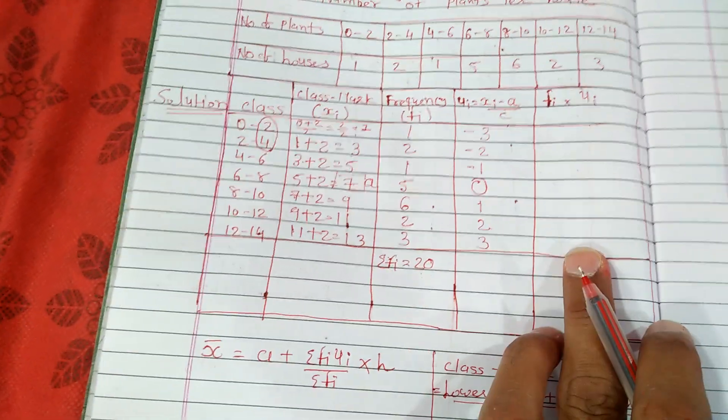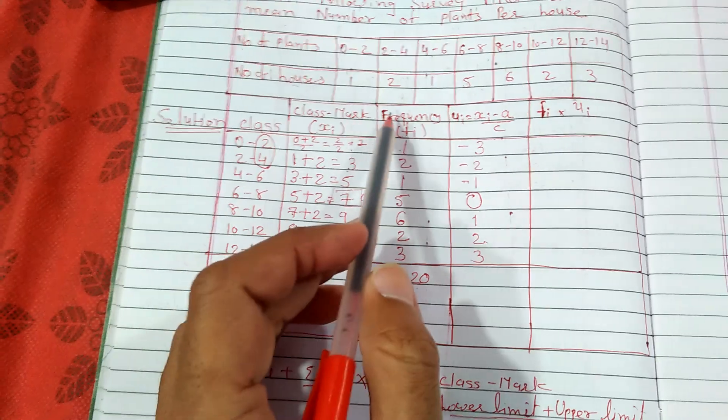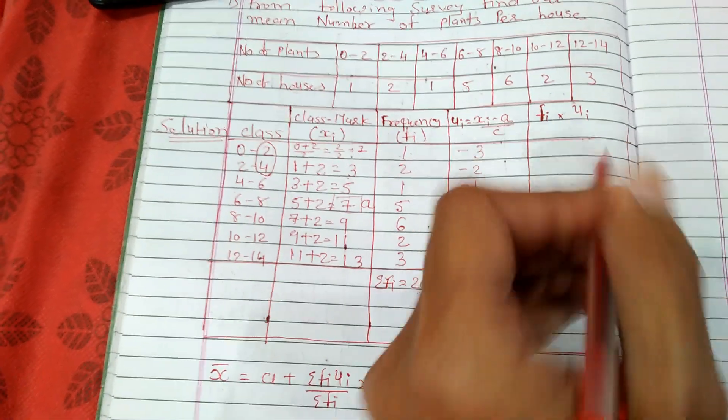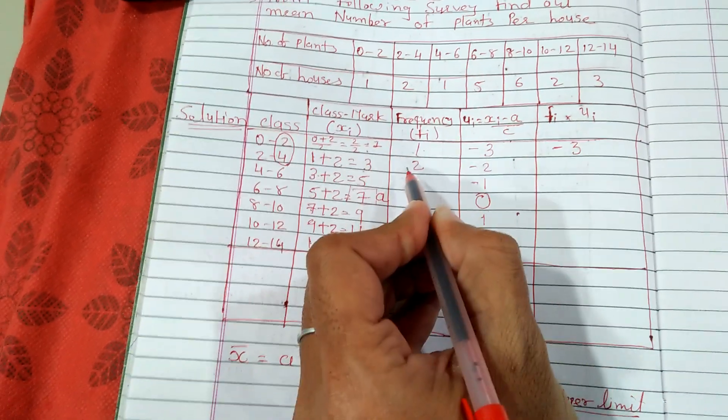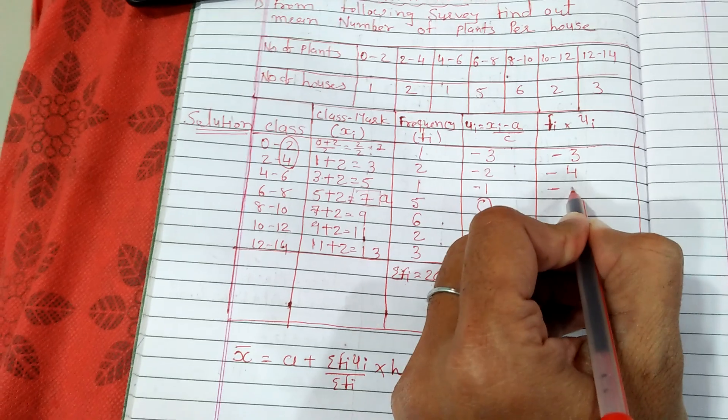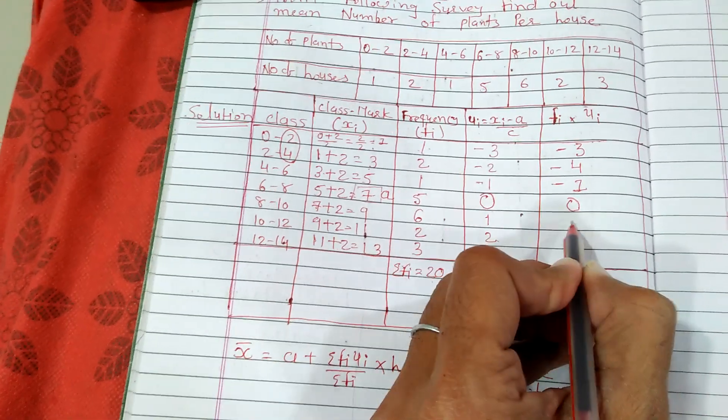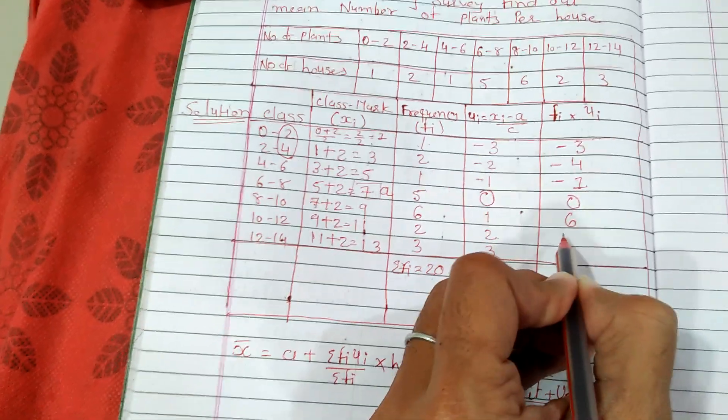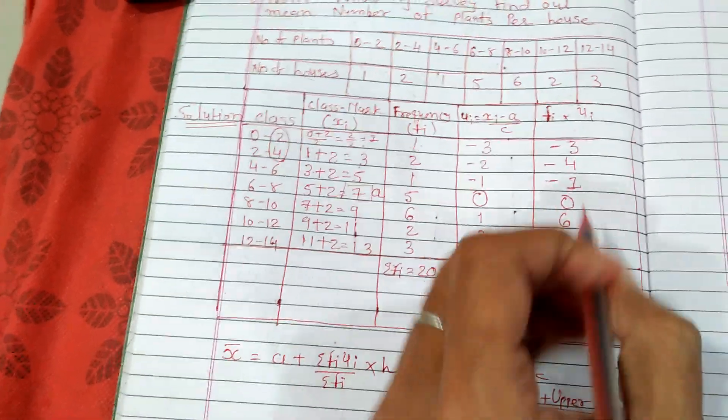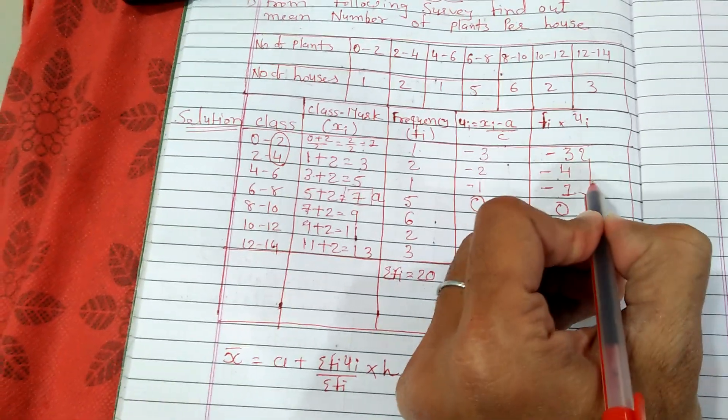Let us move to the fifth column, which is Fi into ui. These all are the Fi, the frequencies, and here is ui. We will multiply both. So 1 into minus 3 equals minus 3, 2 into minus 2 equals minus 4, 1 into minus 1 equals minus 1, 5 into 0 equals 0, 6 into 1 equals 6, 2 into 2 equals 4, 3 into 3 equals 9.